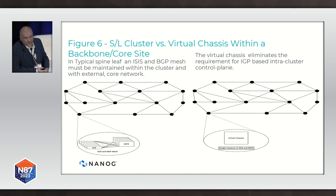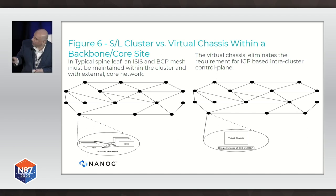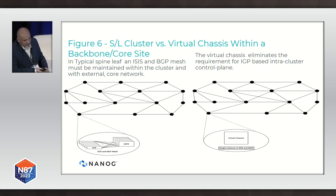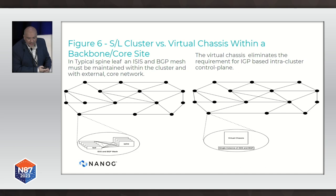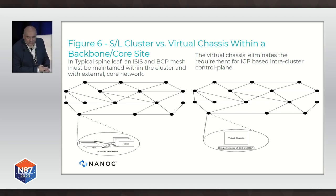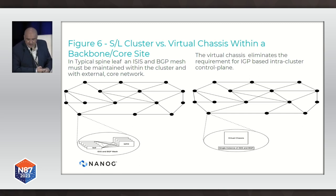Figure 6 shows a spine and leaf cluster versus what a virtual chassis within a backbone core site looks like. In a typical spine and leaf, you'll have an ISIS and BGP mesh that needs to be maintained within the cluster and with the external core network. Each component on the spine and leaf is a separately managed object with its own loopback addresses, routing protocols, and config file. The virtual chassis eliminates the requirement for an IGP-based intracluster control plane — now you only have one instance of ISIS or BGP. Network architects can focus on mission-critical services rather than assuring SLAs within the cluster.